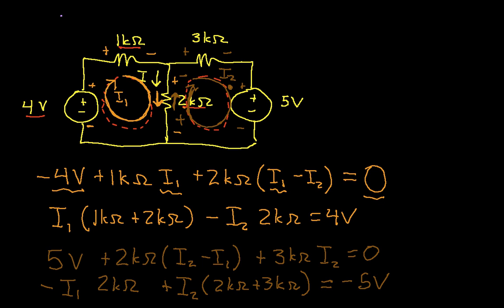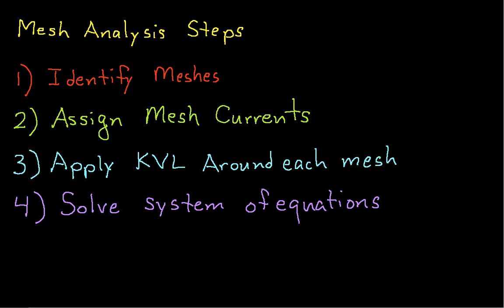So basically what we've done here is we now have one equation, the second equation, we have two equations and two unknowns, so we're finished with step 3. Step 4 is to solve our system of equations.